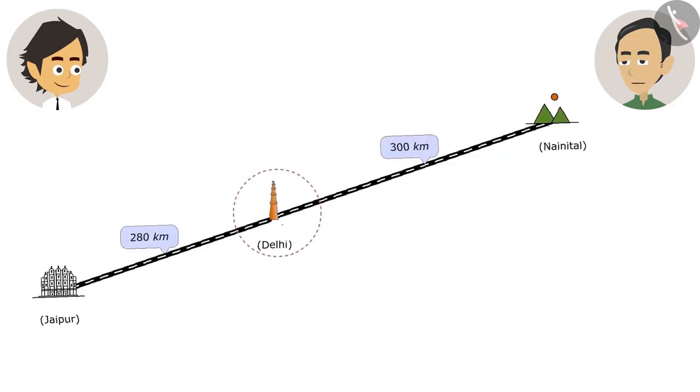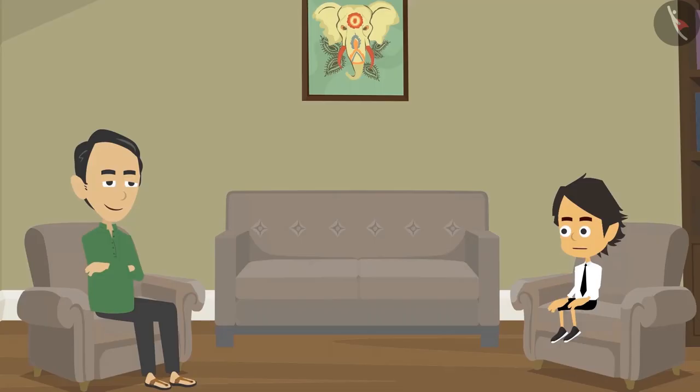Look, we are here and if we go 300 kilometers towards right, we will come to Nainital. And if you go 280 kilometers left from here, we will come to Jaipur. Now tell me, how far is Jaipur from Nainital? The distance between the two is 580 kilometers. That's why we cannot go to Jaipur this time, we will go later.